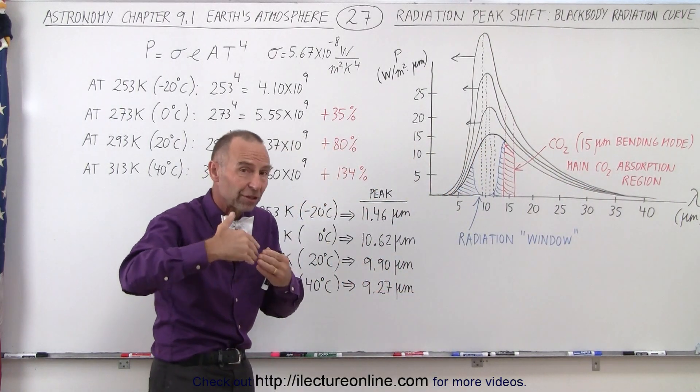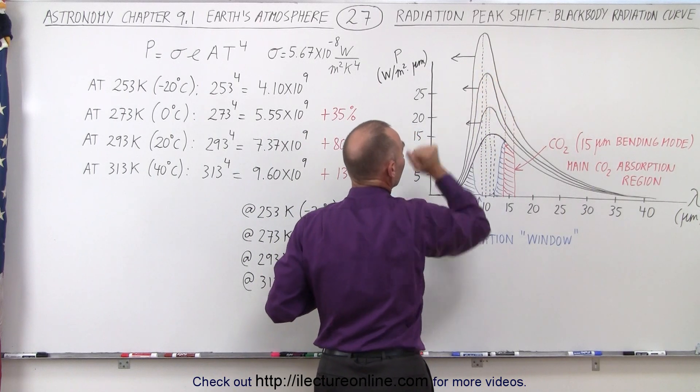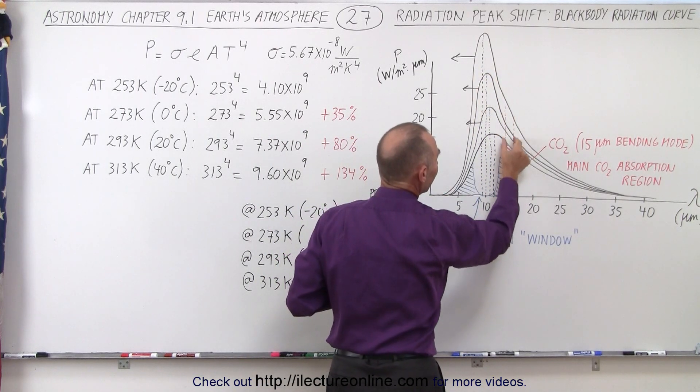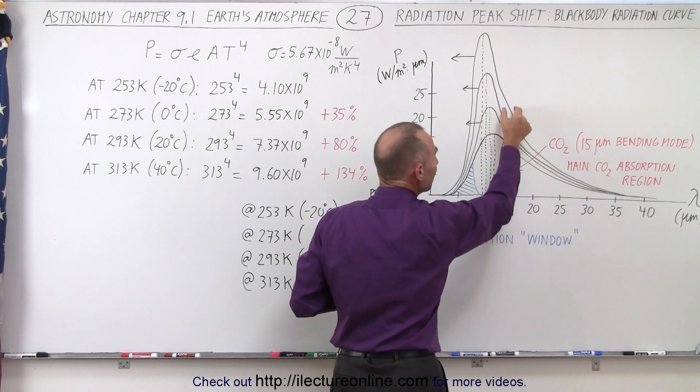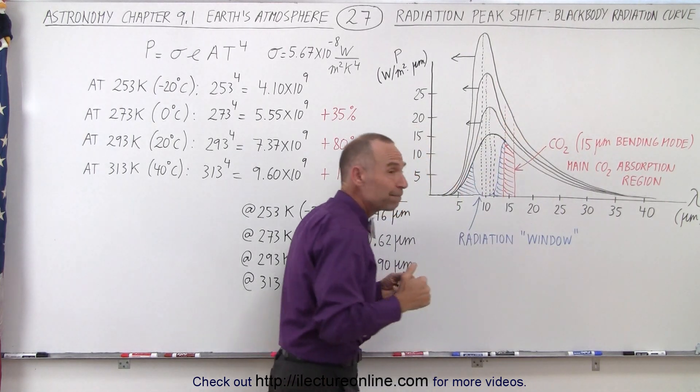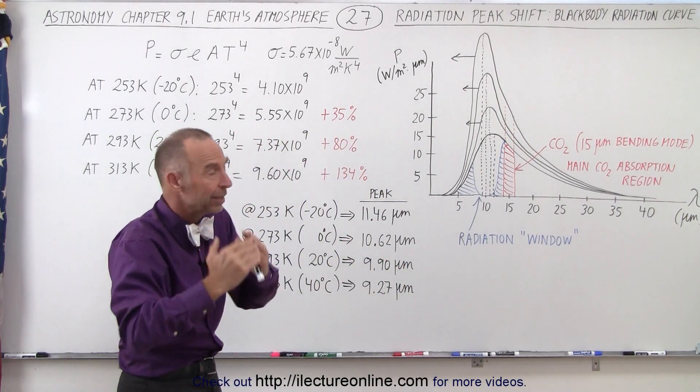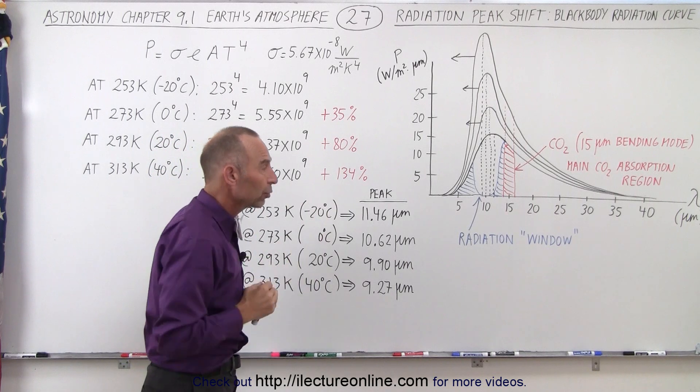But as the temperature in the atmosphere continues to climb and the peak of the blackbody radiation curve shifts to the left, you can see that as a percentage, the amount of heat being absorbed by the carbon dioxide drops significantly at very high temperatures. It's not as effective in keeping in the heat as it is when it's at colder temperatures.